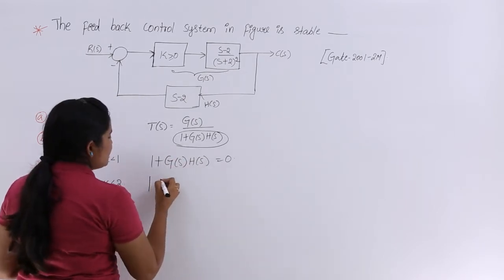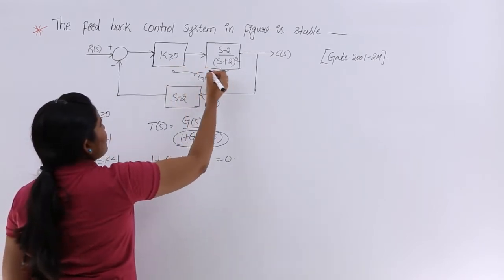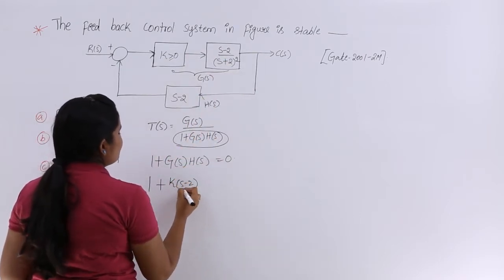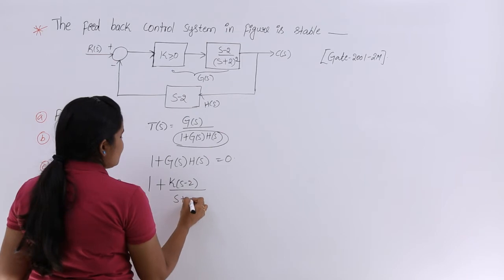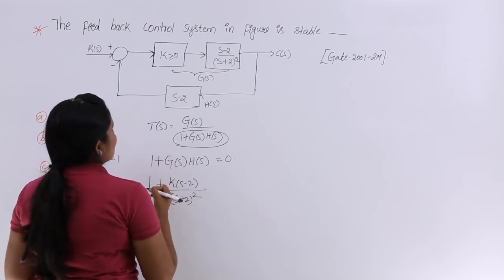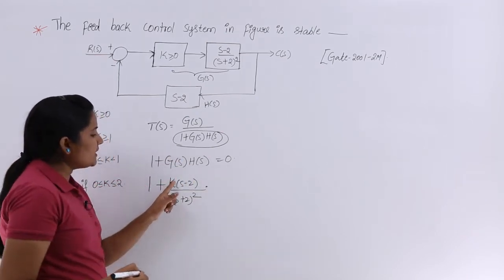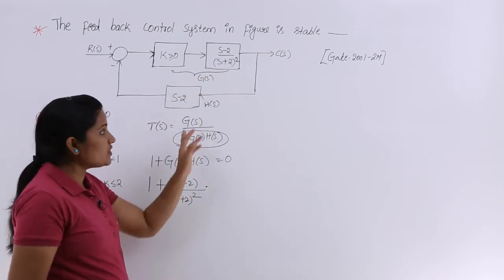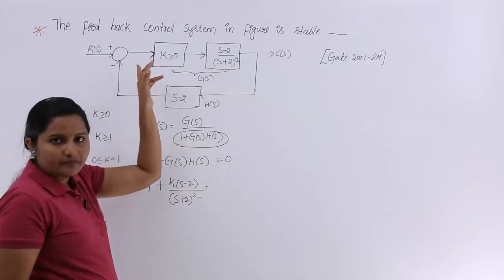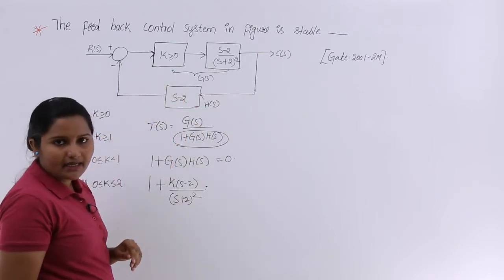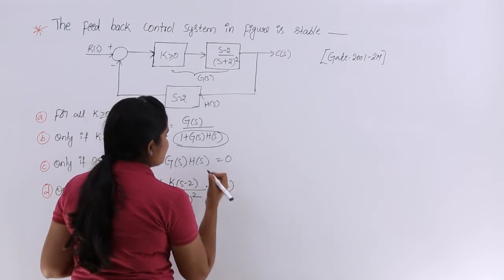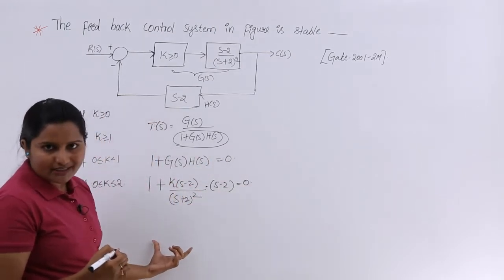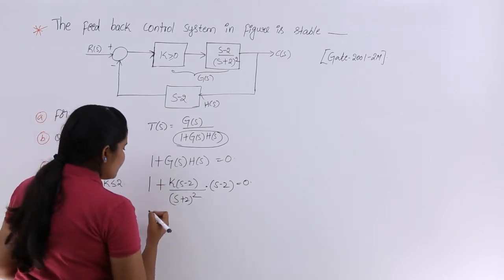So G(s) is obtained by multiplying k with (s − 2) divided by (s + 2)², giving G(s) = k(s − 2) / (s + 2)². For H(s), the feedback gain is (s − 2), so H(s) = s − 2.